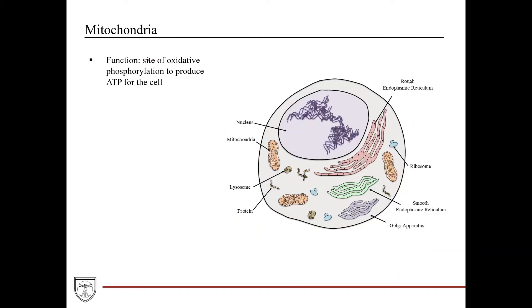The mitochondria are the site of oxidative phosphorylation to produce ATP within the cell — these are the energy centers of the cell. They have an elongated shape with two separate membranes, the inner and outer membrane, and they have a lot of folds called cristae that invaginate within the organelle itself.